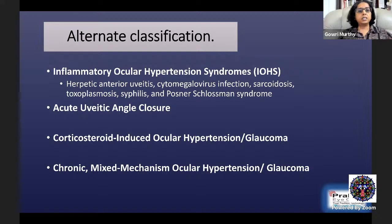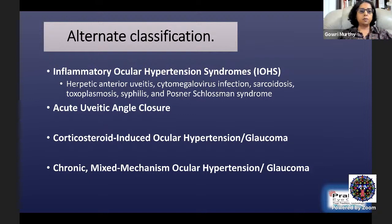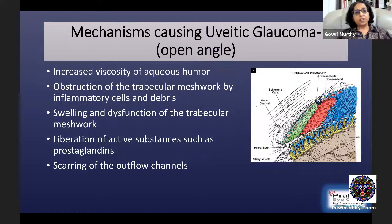When classifying uveitic glaucoma, we can classify it based on the mechanism — whether it is open angle or angle closure — based on course (acute or chronic uveitis), pathology (non-granulomatous or granulomatous), severity (hypertensive uveitis or post-inflammatory glaucoma), and cause (infectious, autoimmune, systemic, or idiopathic). The more accepted classification is inflammatory ocular hypertension syndrome, which includes herpetic anterior uveitis, cytomegalovirus infection, sarcoidosis, toxoplasmosis, and Posner-Schlossman syndrome. There is also acute uveitic angle closure, corticosteroid-induced ocular hypertension, and chronic mixed mechanism glaucoma.